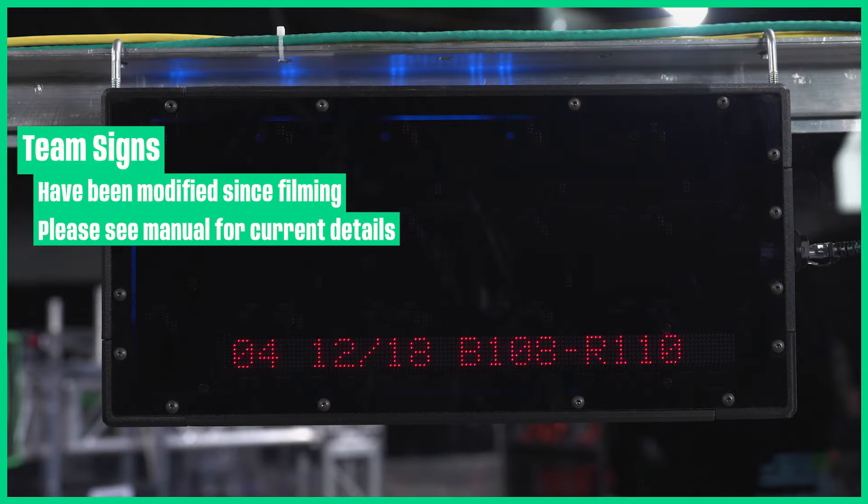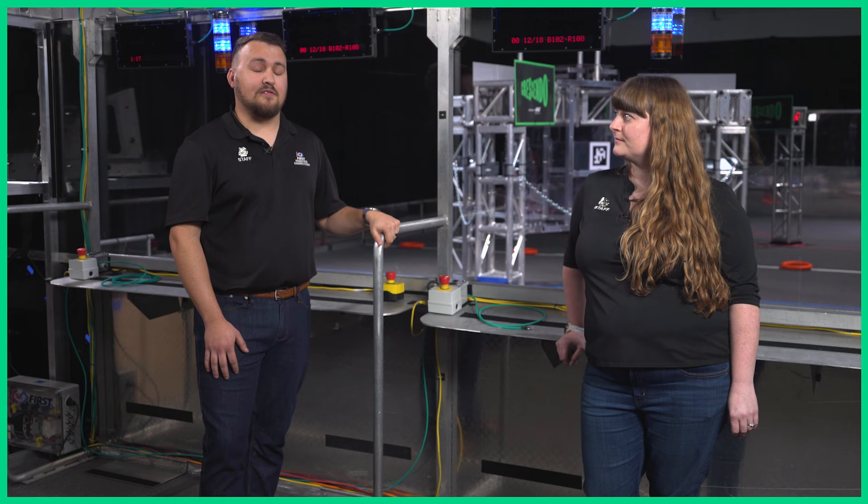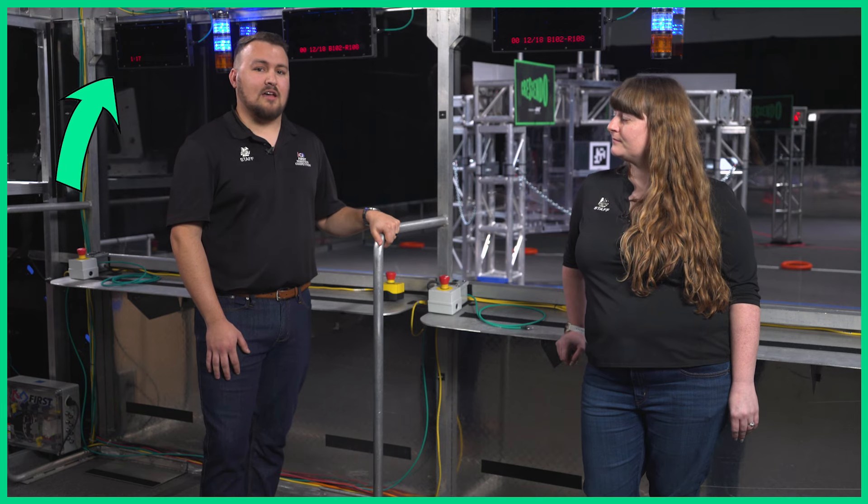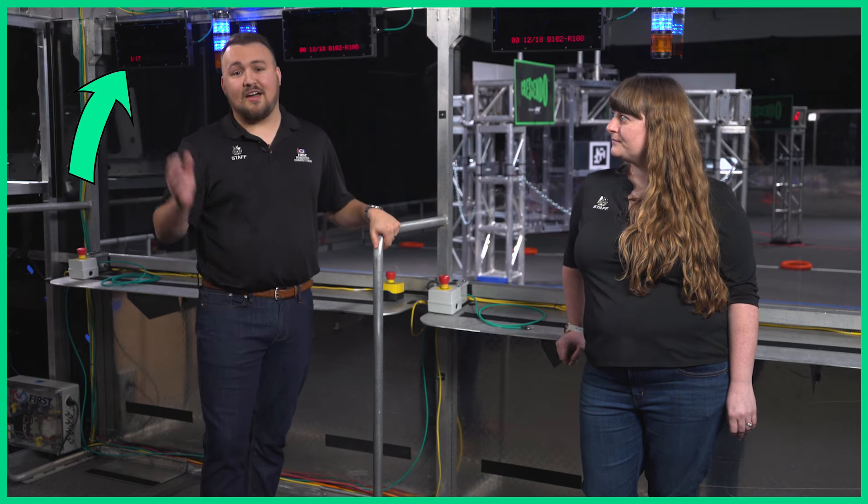They also display the following information on the back: Amp timing, progress towards the melody rank point, and match scores. It can be difficult to see the timer on the far side of the field, but the official time is also displayed on the timer in the back of driver station too.